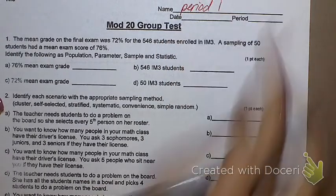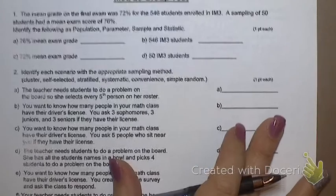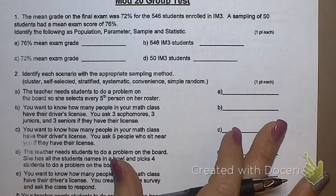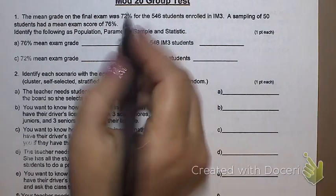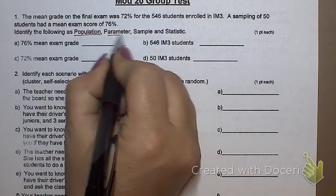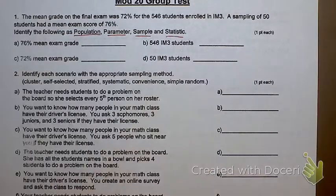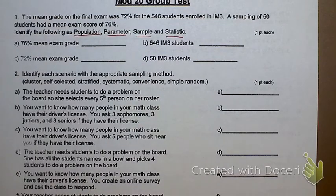Period one. Number one is basically a multiple choice question. Your options are population, parameter, sample, and statistic. Can any of those be used more than once in this problem? Not in this one. You're going to have one population, one sample, one parameter, and one statistic.